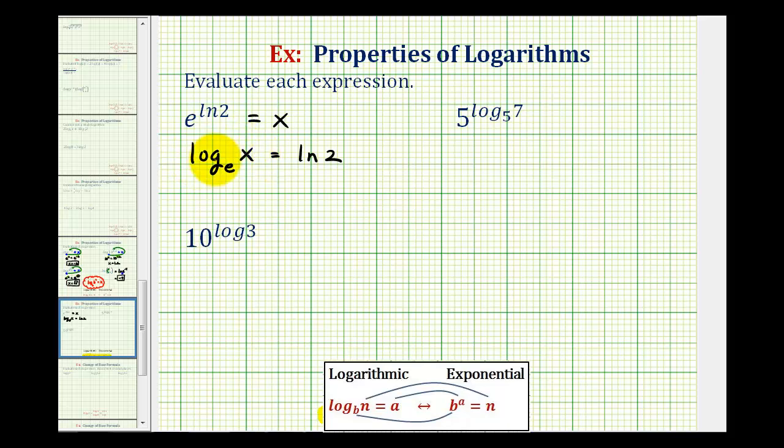Log base e of x is the same as natural log x, so we have natural log x equals natural log two. These two logs are equal to each other and their bases are the same. Therefore, the number part of the logs must be the same, so x equals two. If x equals two, then this expression is equal to two as well.